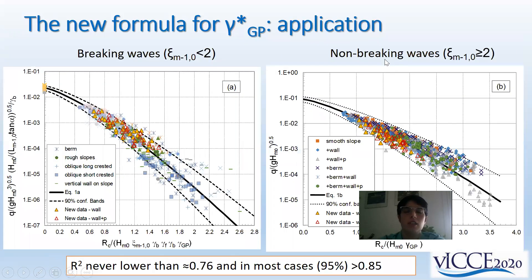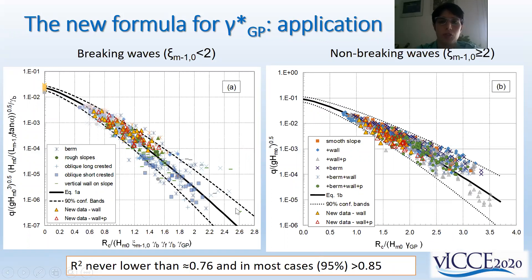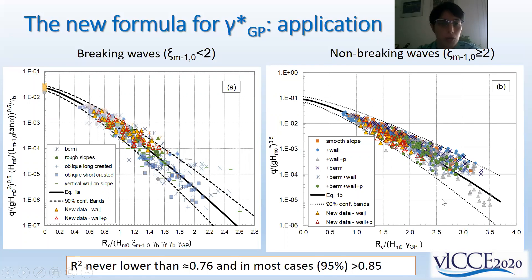The results of the application of the genetic programming technique are shown in two charts for breaking and non-breaking waves, on the left and right respectively. We see the overtopping conditions against the relative freeboard. To the right, for non-breaking waves, all the data by van Dorsen and our new data with red and yellow triangles show optimal agreement and a non-biased distribution around the formula. The same is found for breaking waves, where our data triangles are compared to other data from the literature.